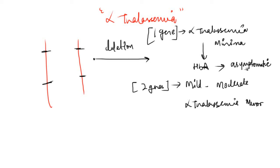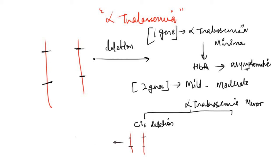With two gene deletion, there are two types: cis deletion and trans deletion. In cis deletion, both genes are deleted from the same chromosome — for example, both paternal alpha genes are deleted while the two maternal genes remain. In trans deletion, one alpha gene is deleted from the paternal chromosome and one from the maternal chromosome.